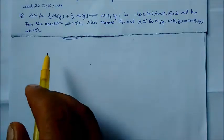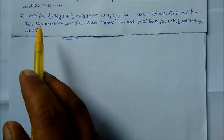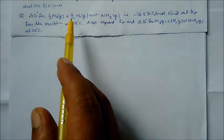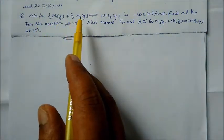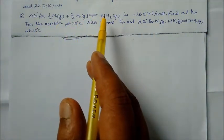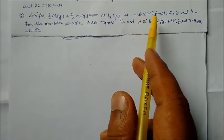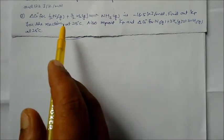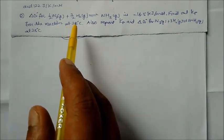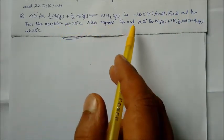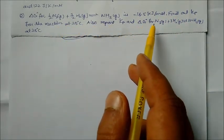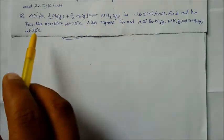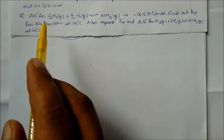Second question: for the reaction ½ N₂(g) + 3/2 H₂(g) ⇌ NH₃(g), ΔG° = −16.5 kJ/mol. Find Kp for this reaction at 25°C, and report ΔG° of the reaction at 25°C.